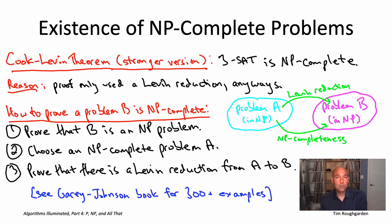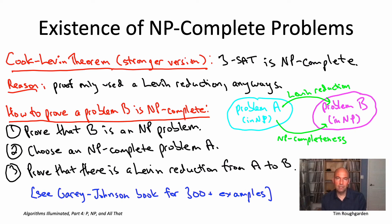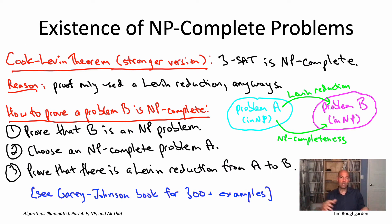That concludes the videos accompanying the optional Chapter 23 on P, NP, and all of that. Thanks very much for checking them out. I hope you now feel much more solid mathematically on what it means for a problem to be NP-hard, what the rigorous definition is, what the formal definition of the P versus NP conjecture is, the difference between NP-hard and NP-complete, and what fancier conjectures like the exponential time hypothesis are. These videos were directed at those of you motivated to reach level four expertise with NP-hard problems — where you can regale colleagues at a whiteboard with what the P versus NP conjecture actually is.